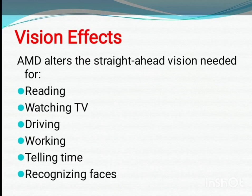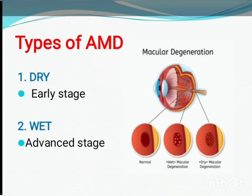As the macula breaks down, our sharp central and detailed vision is impaired. AMD alters the central vision we require for activities like reading, watching TV, driving, working, telling time, and recognizing faces. Someone with AMD might require a magnifying glass or more light to read, and may need assistance with daily living.